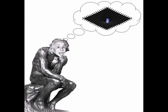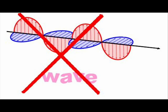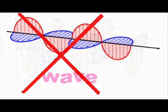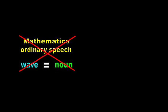Unfortunately for our misguided mathematicians, there is no object in physics called a wave. Wave is not what something is, but what something does. The wave of mathematics is not a noun, but a verb.